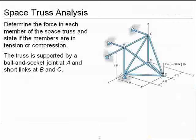Here's our space truss. We're going to determine the force in each member and state whether that member is in tension or compression. It's supported by a ball and socket joint here at A, and short links here at B and C. A short link means that there's only force applied in the direction of the link, so we'll only get reactions in the direction of the short link at B and C.